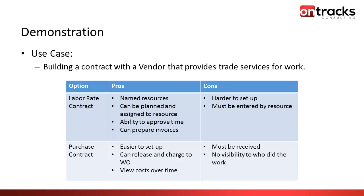Now I'm going to jump into the application. The use case I'm going to demonstrate is building a contract with a vendor that provides trade services, done two different ways. The first way is with a labor rate contract. One advantage is having named resources — if these contracted people are essentially at your facility 40 hours a week, you want them as labor in your system so schedulers and planners can assign work orders to them, and they can enter their time directly on the work order.